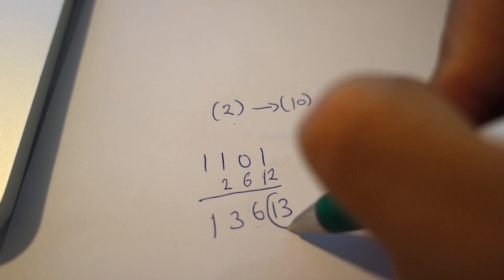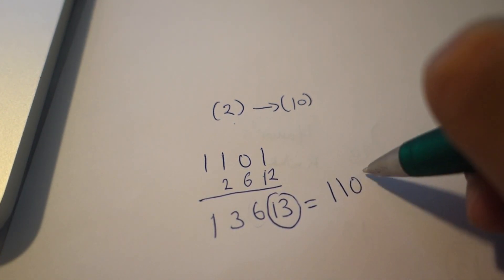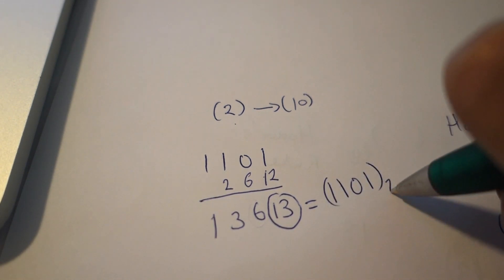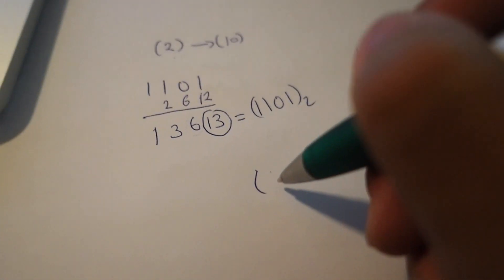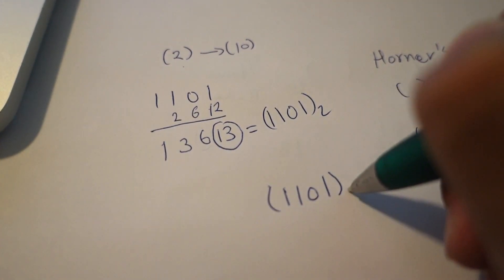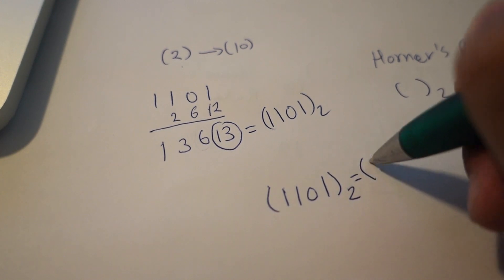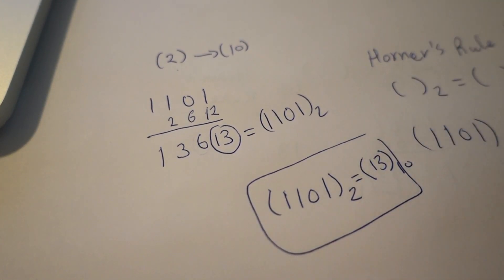So this is equivalent to our number in binary, in base 2. So now we have this number 1101 base 2 equals 13 base 10. Thank you for watching.